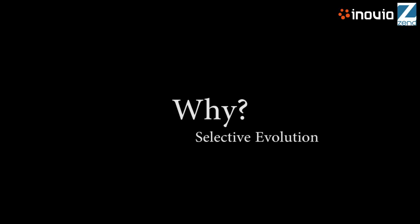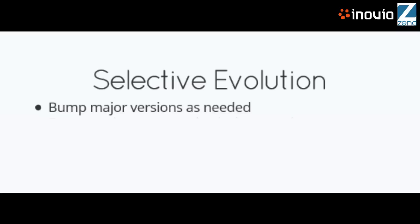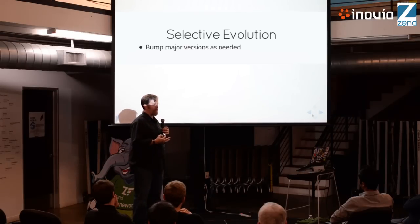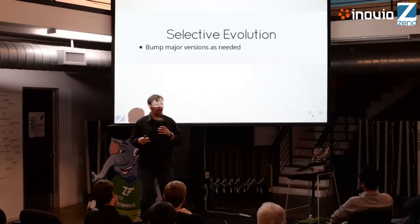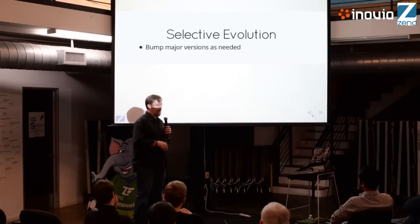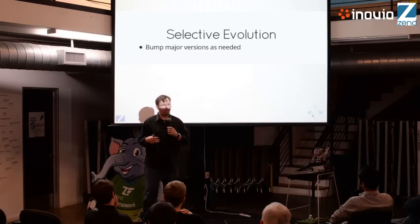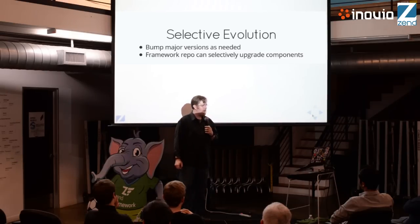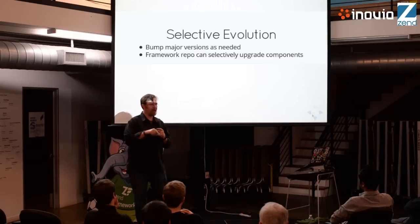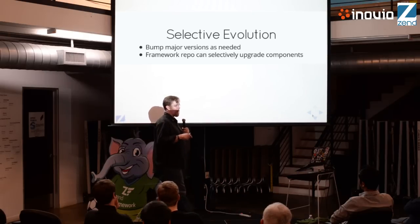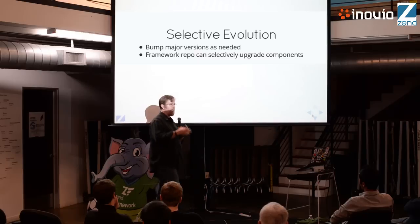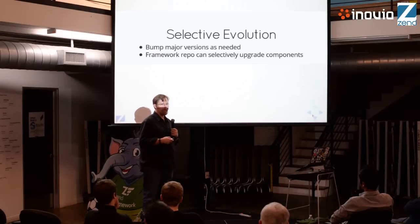Separating components also allows us to do selective evolution. We can choose which ones are going to bump new features. We have three or four components — things like the event manager and service manager — that really need major rewrites for performance and flexibility reasons. Other components are perfectly stable right now. Why would we bump their version just because something else changed API? Because the framework becomes a meta-package, we can pin it to specific versions while individual components continue to evolve independently, which is a really nice thing.